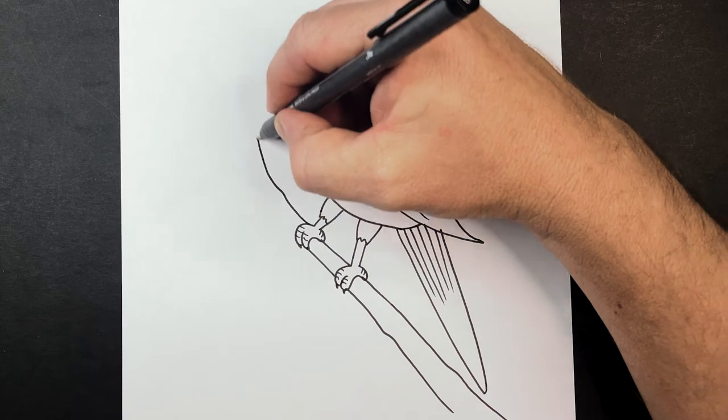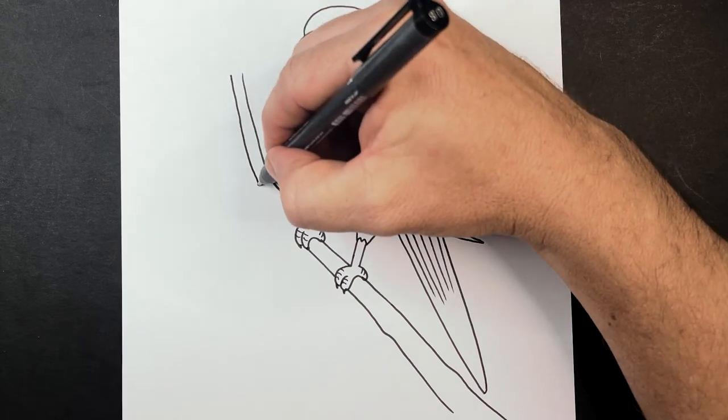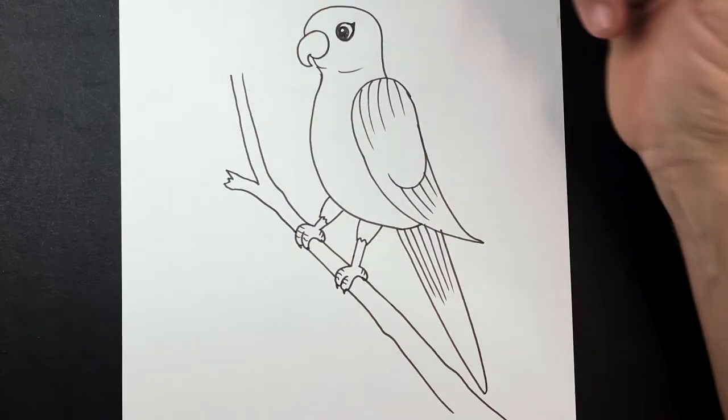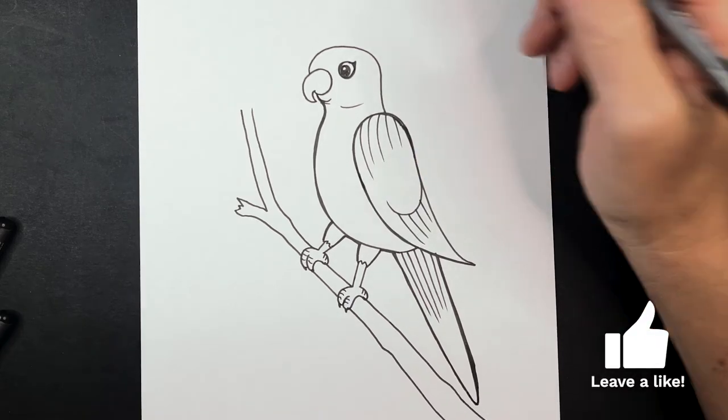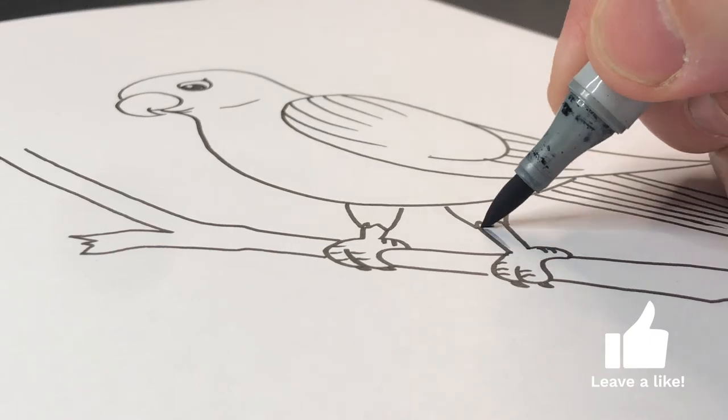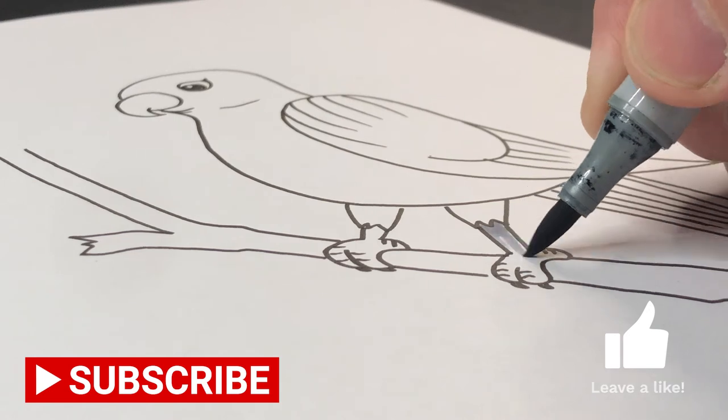Now you might like to keep it as a singular branch or it can fork off like mine does here. If you've enjoyed drawing the king parrot make sure to give me a like and don't forget to subscribe if you want to watch other videos similar to this one.